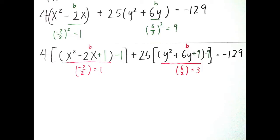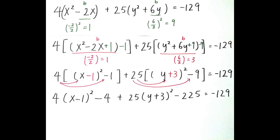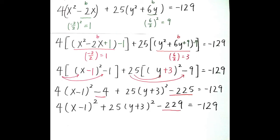Next we need to find the perfect square of each trinomial. To find the square of x plus or minus a number, we need to divide b by 2. Dividing negative 2 and 6 by 2, we get the perfect square of each trinomial. Then we use the distributive property to multiply each expression and expand them. After expanding the equation, we subtract negative 4 and negative 225, which gives us negative 229.